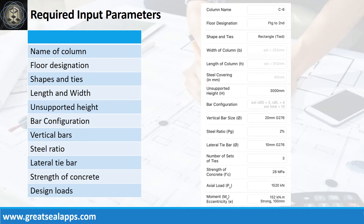Strength of concrete: 28 MPa. Factored axial load: 1520 kN. Factored moment: 152 kNm and eccentricity: 100 mm at strong axis.